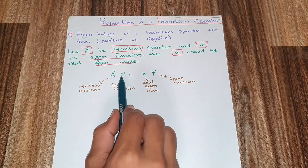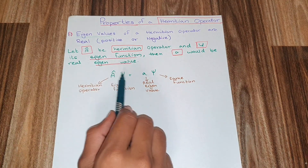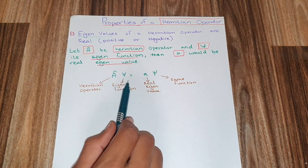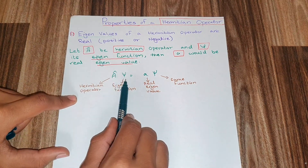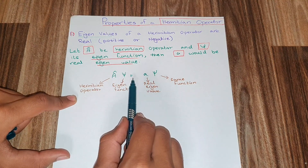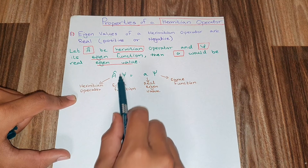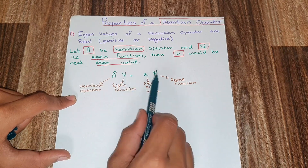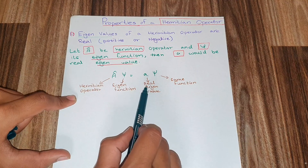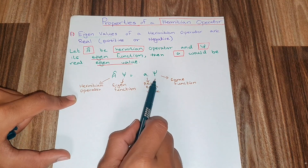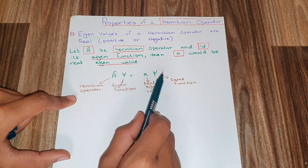As you know, in an eigenvalue equation, the eigenfunction is psi. I have taken an example where an operator A, which is a Hermitian operator, is applied on psi. On applying the operator on psi, the answer I get is A times psi, since in an eigenvalue equation the eigenfunction is repeated on the right-hand side.